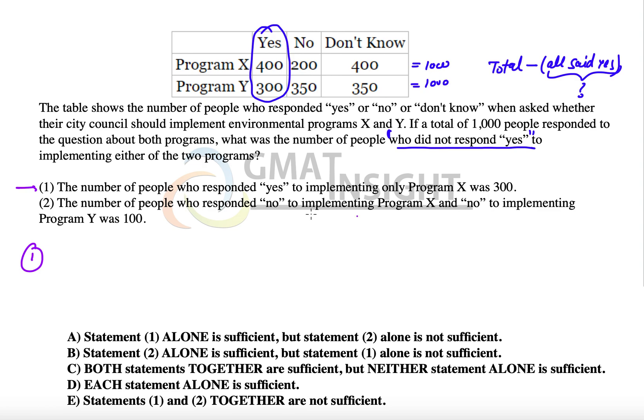The first statement says the number of people who responded yes to only program X was 300. If out of the 400, 300 said yes to only program X, that means remaining 100 must have said yes to program Y as well.